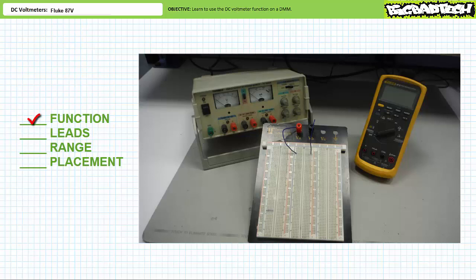Function: we need to place the DMM in DC voltmeter mode. Place the Fluke 87 DMM in DC voltmeter mode by turning the selector switch to the position identified with a capital V with a straight line above it. This is in contrast to the V with a squiggly line over it, which is utilized for AC voltage measurement.